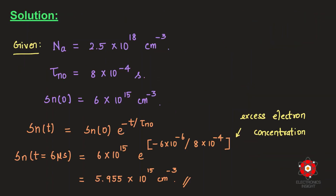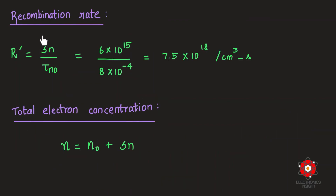Returning to the problem: the excess electron concentration at t = 6 μs is given by Δn(t) = Δn(0) · exp(-t/τn₀). Substituting Δn(0) = 6×10¹⁵ cm⁻³, t = 6 μs, and τn₀ = 8×10⁻⁴ s, we can compute Δn. The electron-hole recombination rate equals excess electron concentration divided by the excess carrier lifetime.